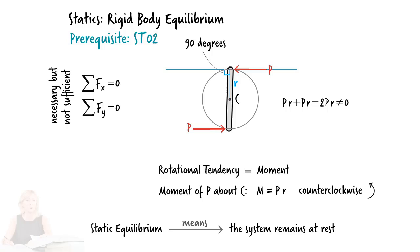For the rigid body not to rotate, for it to remain in the state of static equilibrium, the net moment about point C, or about any other point in the two-dimensional space, must be zero. Thus, our third equilibrium equation can be written as the sum of moments equals zero.